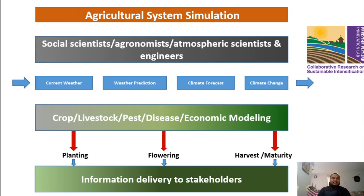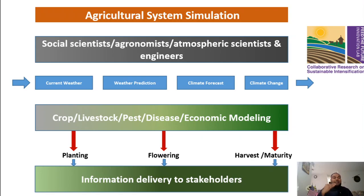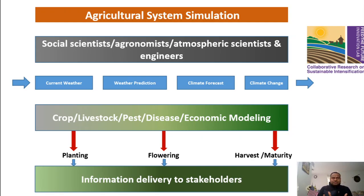Weather phenomena at a seven to ten day scale allow prediction of upcoming weather. Climate forecasts cover a couple of months ahead, and climate change operates at a longer decadal scale. So if you are a crop modeler or an economic modeler, you need to think at different scales. For crop decisions, no one can predict exactly what the next season will bring. When you are at planting stage, you need information based on climate forecasts on how to plant and when to plant. To manage those upcoming risks, various measures can be taken: maintaining storage reserves, diversifying crop production, insurance, taxation, and subsidies from the government.